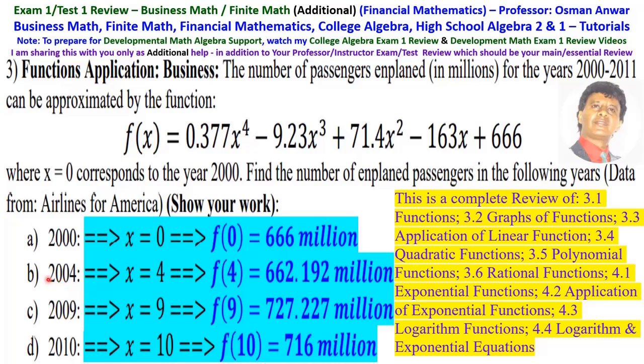B, in 2004. 2004 minus 2000 is 4. That is 4 years later. That is, f(4) is substitute every x by 4. So that is 4 to the 4th, 4 to the 3rd, 4 squared, 4. And that will give you 662.192 million.